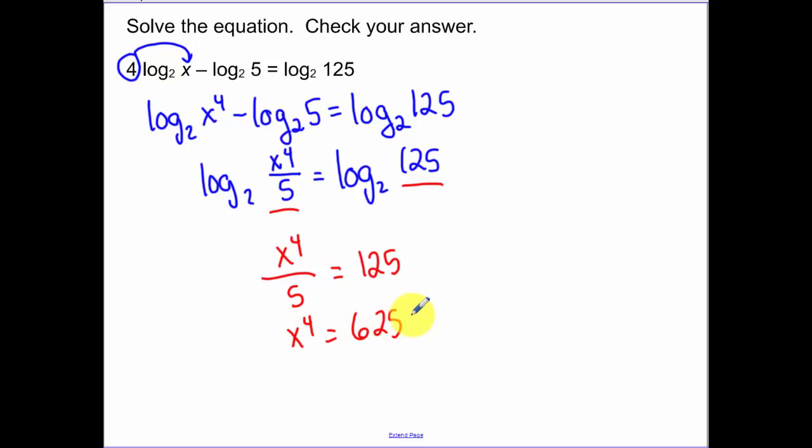Now the fourth root of 625 would be 5. Now just do a quick check with your original. Does your original make sense? Or does this answer make this inside, because that's the only variable, negative? It doesn't, so that's our answer.